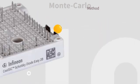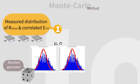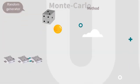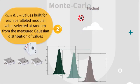In this example, three modules are selected at random. These are from a population with parameters according to the statistical production data with a normalized distribution of variation in RDS on and switching loss. This process is named after the famous casino due to the randomized selection.